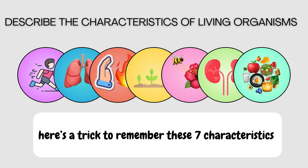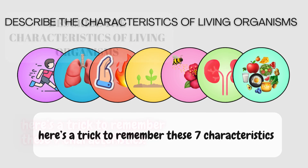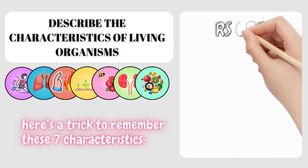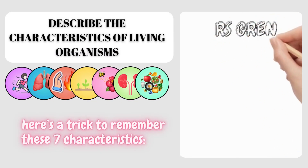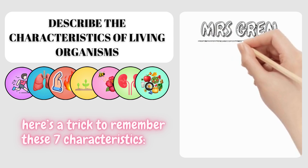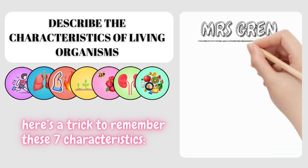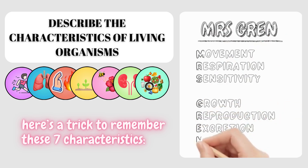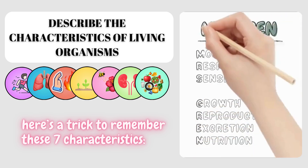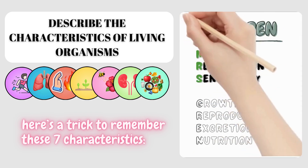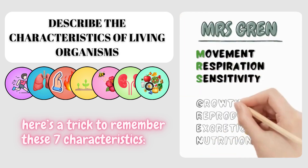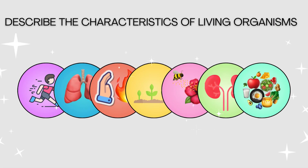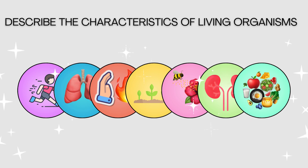That's a lot to remember, but here's a simple trick. To make it easier for you, we use the mnemonic MRS GREN. Each of these letters stands for one of the characteristics of living organisms: M for movement, R for respiration, S for sensitivity, G for growth, R for reproduction, E for excretion, N for nutrition. Just remember — MRS GREN keeps living things alive.